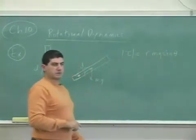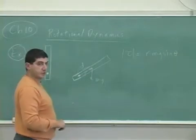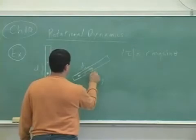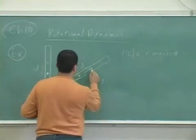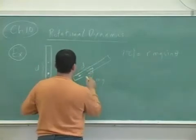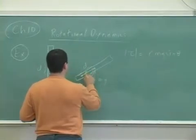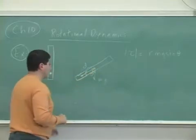The Rmg sine of the angle between the R and the mg. So this is theta here. And then this is the R. And this is the angle between the R and the mg.